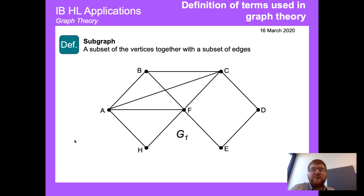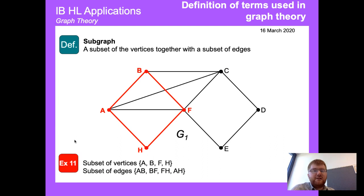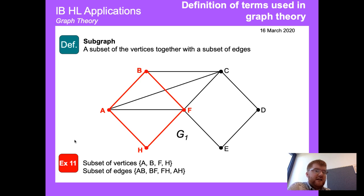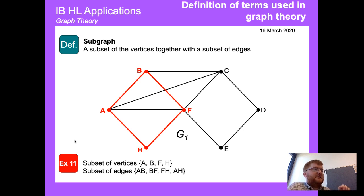A subgraph is like a subset in Venn diagrams — it's a graph within a graph consisting of a subset of vertices together with a subset of edges. For example, the red subgraph has vertex subset {A, B, F, H} and edges A-B, B-F, F-H, and A-H.